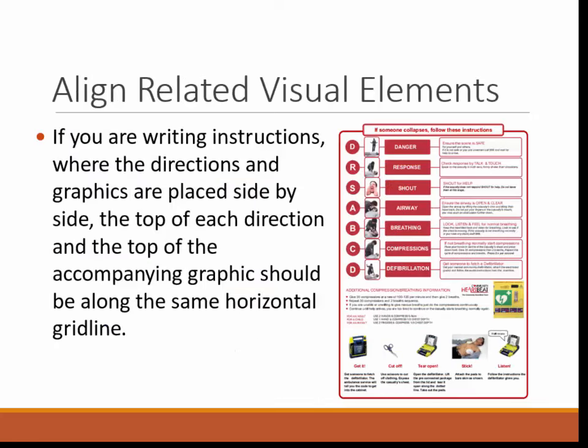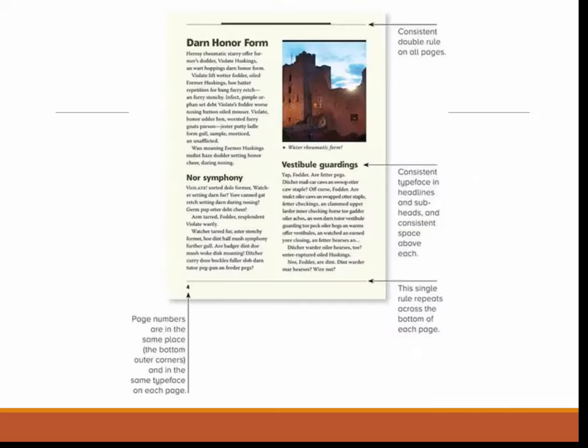Align related visual elements. This is an instruction sheet on using a defibrillator — the instruction and the accompanying visual are in close proximity to one another, so the instructions are easy to follow. Think about the visual framework and how to best present your information within it. Here, again, we have all the elements coming together: a single and double rule on each page, page numbers in the same place, the same typeface for headings and subheadings, aligned text, contrast in that the headings stand out, and white space used to denote proximity.